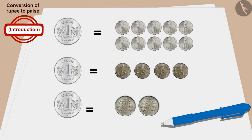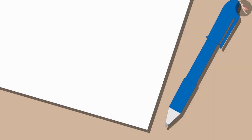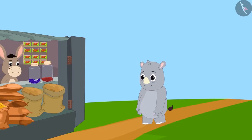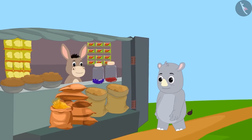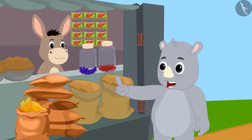In the previous video we learned to convert rupees to paise. In this video we will learn more about it with some interesting examples. Gaggoo has come to buy groceries today and he asked Bola the price of one kg of chickpeas.